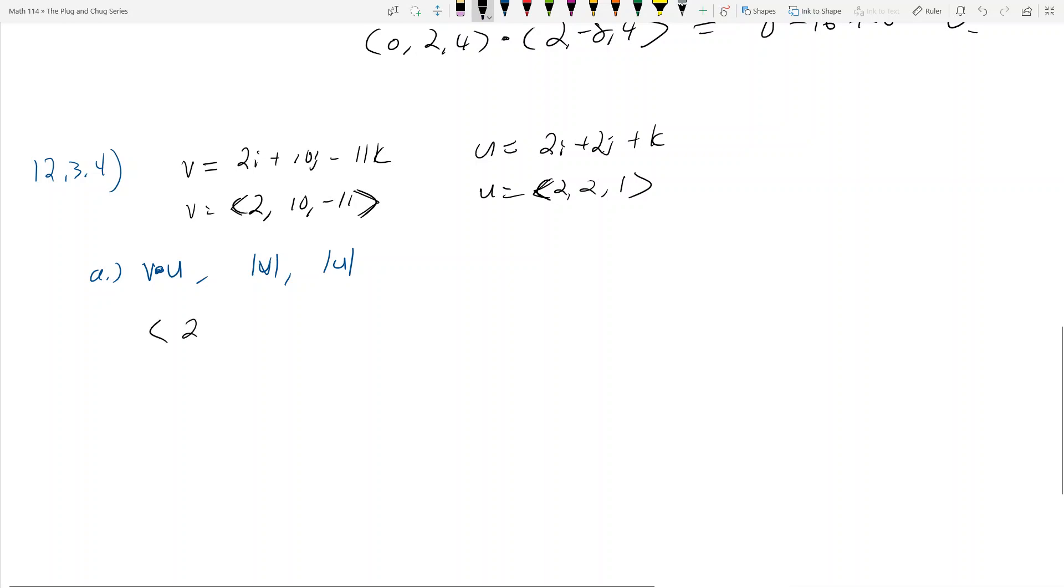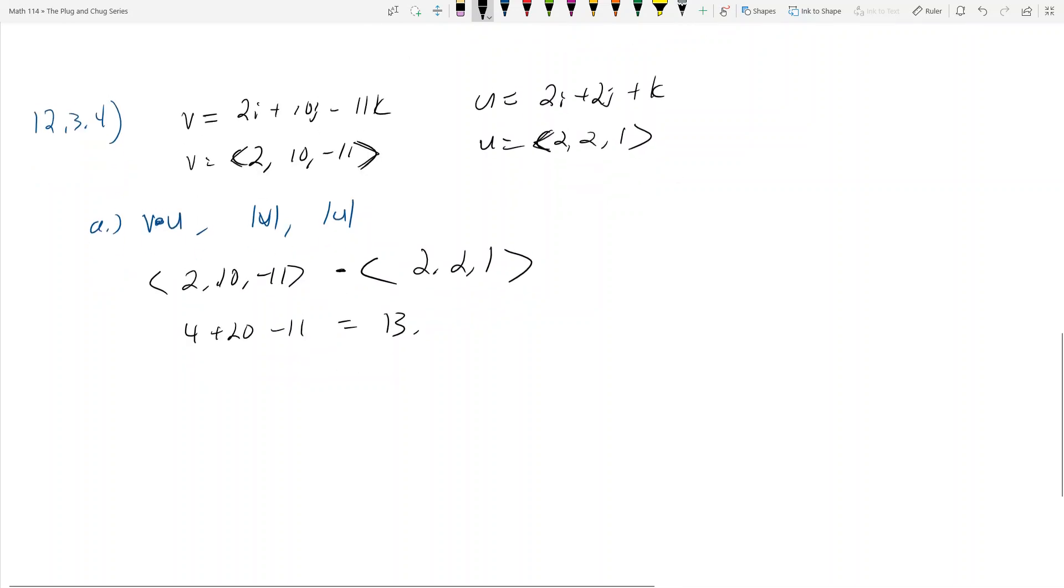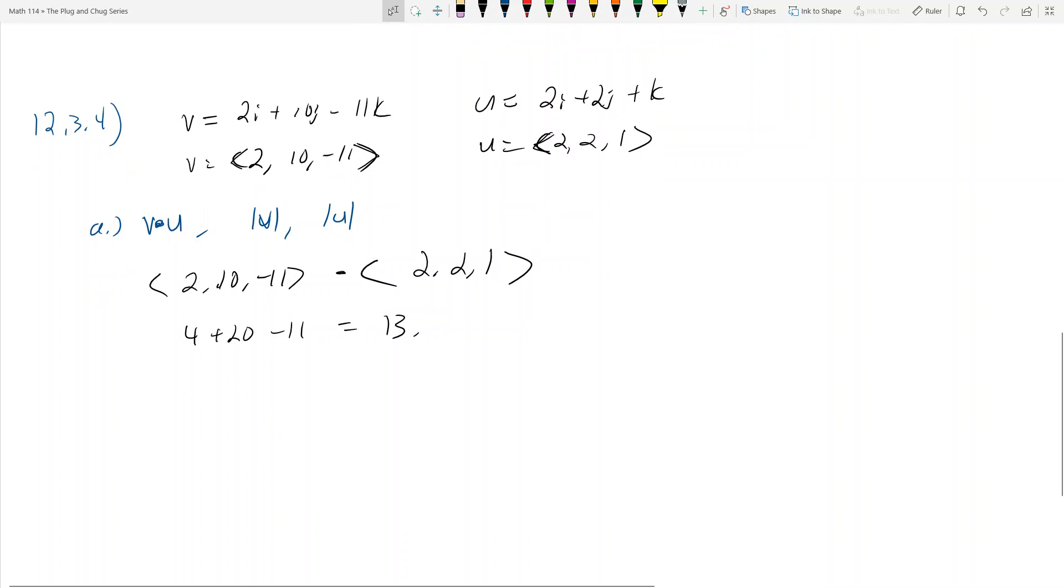The dot product, you guys should know how to do this. You just take the first two components, you multiply them, so that's 4. You take the second 2, that's 20. 10 times 2 is 20. And then you get negative 11 times 1, which is minus 11. And so this is going to be equal to 13. So the dot product is equal to 13.